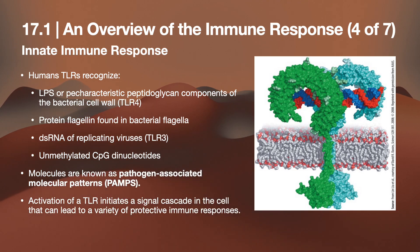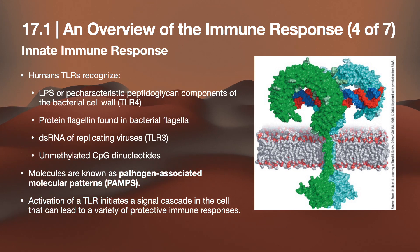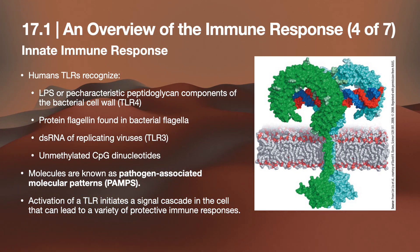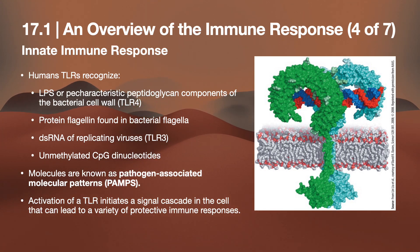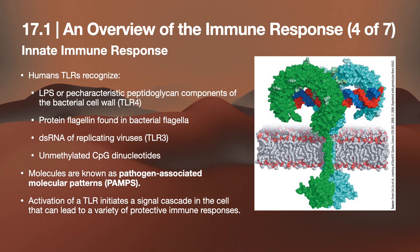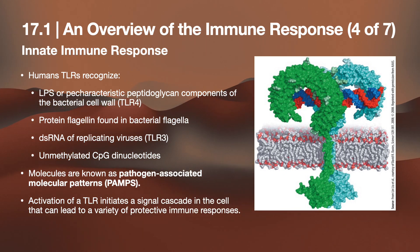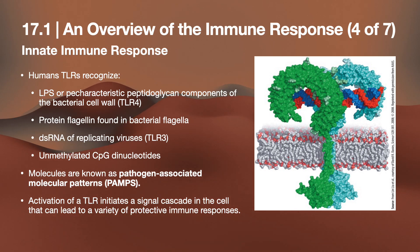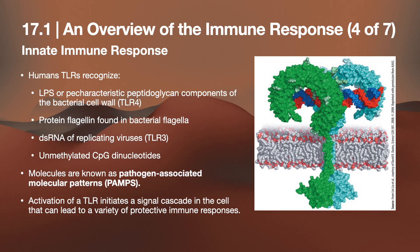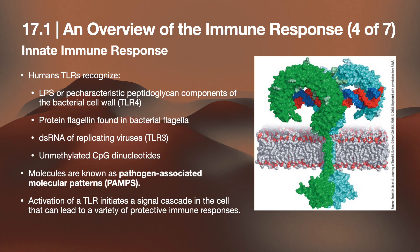Innate immune responses use TLRs to recognize LPS, peptidoglycan components of bacterial cell walls, and protein flagellin found in bacterial flagella. TLR4 responds to flagellin; TLR3 responds to double-stranded RNA of replicating viruses. Unmethylated CpG dinucleotide molecules are known as pathogen-associated molecular patterns, or PAMPs. Activation of TLRs initiates a signal cascade leading to protective immune responses. TLR3, shown bound to double-stranded RNA, sends an intracellular signal alerting the cell to foreign nucleic acid.